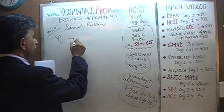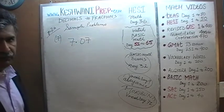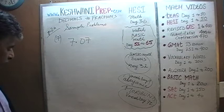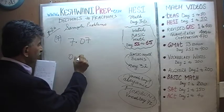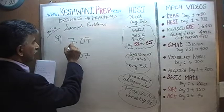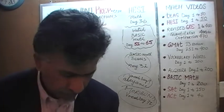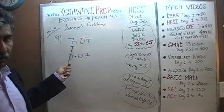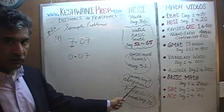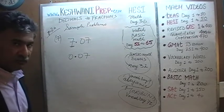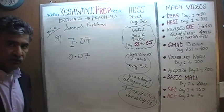Number 7 is asking us to convert 7.07 into a fraction. Let's see what we can do. Leave the 7 — the whole number — in abeyance for now. We will deal with it later. Let's deal with 0.07 first. How can we convert 0.07 into a fraction? We need to make it a whole number.